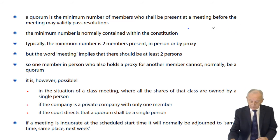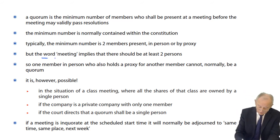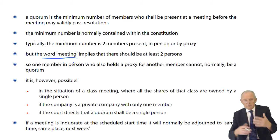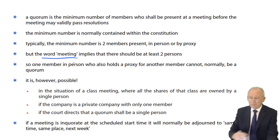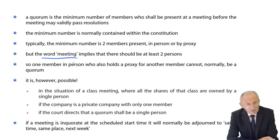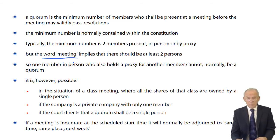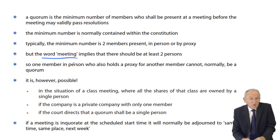The minimum number is normally specified in the articles — typically two members present in person or by proxy. That raises an interesting question because the word 'meeting' implies two people. Can you have a meeting if only one person turns up? For public or private companies, if there's only one member, you can't have a meeting of two. Both public and private companies need only have one member, so one member alone may be sufficient.